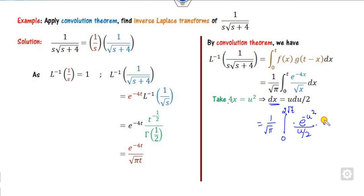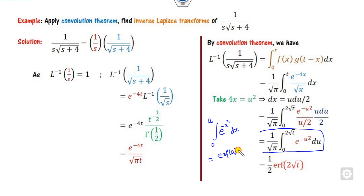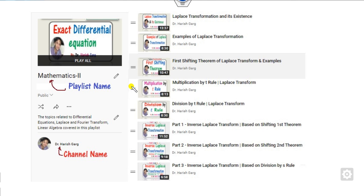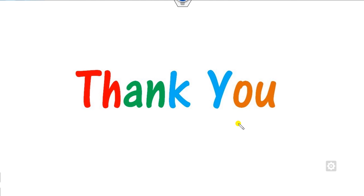After substitution, the u terms cancel and the integral reduces to the form (1/√π)·∫₀^(2√t) e^(−u²) du. Recalling that ∫₀^a e^(−x²) dx = (√π/2)·erf(a), with a = 2√t, the √π cancels and the final answer is erf(2√t). This is the complete solution using the convolution theorem. You can find more videos on Laplace and inverse Laplace on the channel Dr. Harish Garg. Best of luck, students.